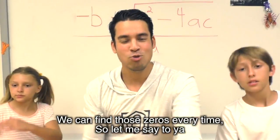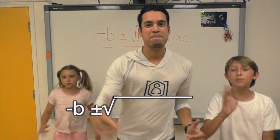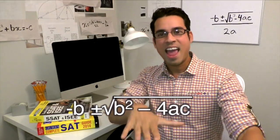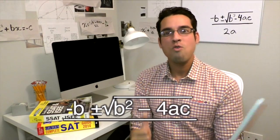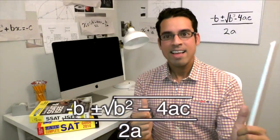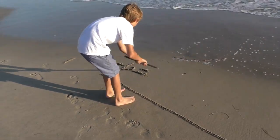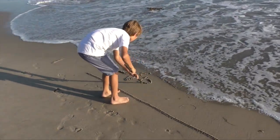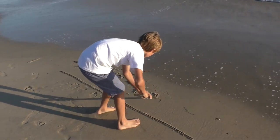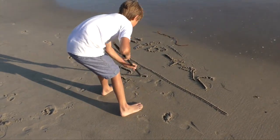Negative b plus or minus the square root of b squared minus 4ac all over 2a. Negative b plus or minus the square root of b squared minus 4ac all over 2a.